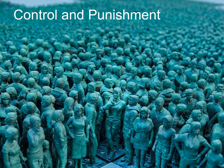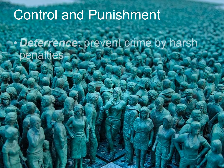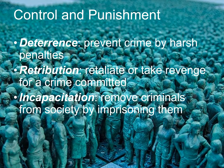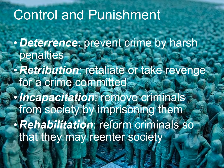When we consider crime, we also have to consider control and punishment. There are four main philosophies of punishment. Deterrence is preventing crime by harsh penalties. Retribution is to retaliate or take revenge for a crime committed. Incapacitation is the act of removing criminals from society by imprisoning them. While rehabilitation is reforming criminals so that they may re-enter society. Each of these philosophies takes a different approach to punishment, and in practice they often overlap.